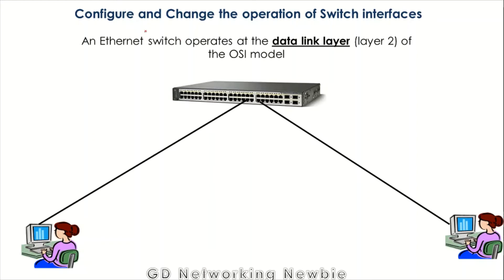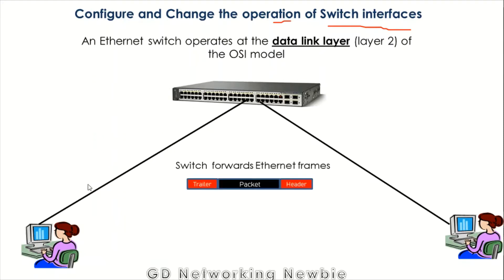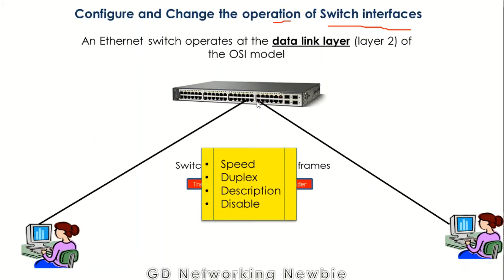Hi everyone. Today we are going to discuss how to configure and change the operation of switch interfaces — both types. A switch, an Ethernet switch, operates at the data link layer of the OSI model and its job is to forward frames. It receives frames from one user and forwards them to another using interfaces or ports — these are the physical connections. Today we will specifically discuss how to configure speed, duplex, description, and disable.